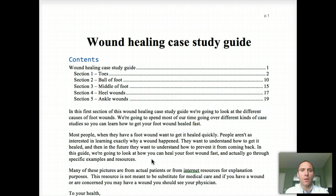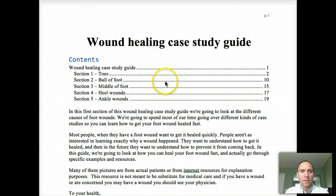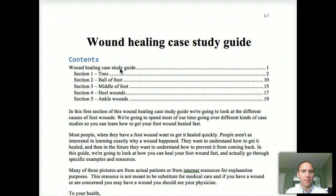Today what I'm going to go over is something called a wound healing case study guide. You can get access to it at healmyfootwoundfast.com — just put your name and email there and I'll send it to you. I just wanted to quickly go over what's in here. There are five different sections for wounds on the toes, ball of the foot, middle of the foot, heel, and ankle.